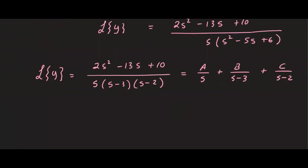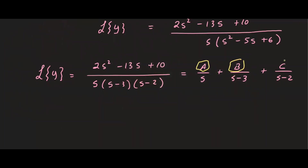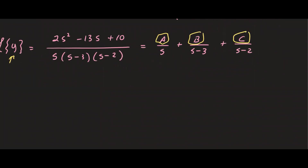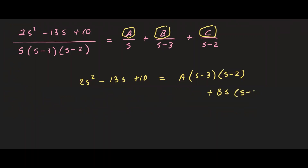The next step is to solve for the coefficients A, B, and C so we can take the inverse Laplace transform and find the solution y. We multiply through by the denominators to get: 2s squared minus 13s plus 10 equals A(s minus 3)(s minus 2) plus B·s(s minus 2) plus C·s(s minus 3). We then pick convenient values of s to solve for each constant.